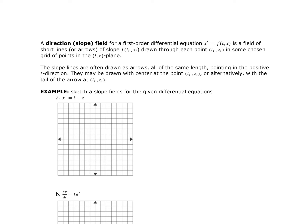I'll start with a chart: values for T, values for X, and then X prime as the output. When T equals 1 and X equals 1, X prime is 1 minus 1, which is 0. This represents the slope at that point. So at the point (1, 1), my slope is 0, which means it's a horizontal line.